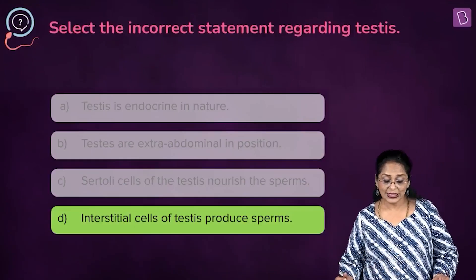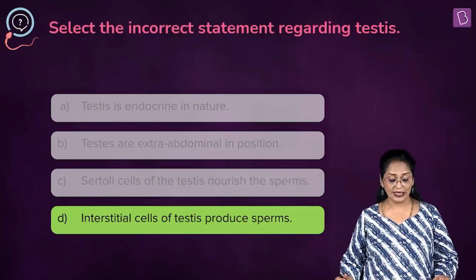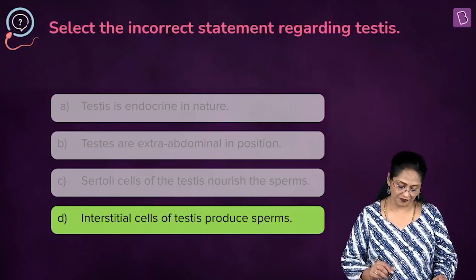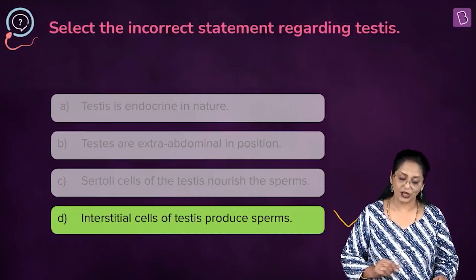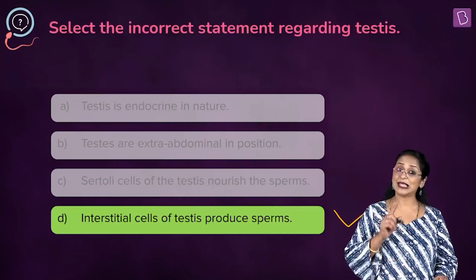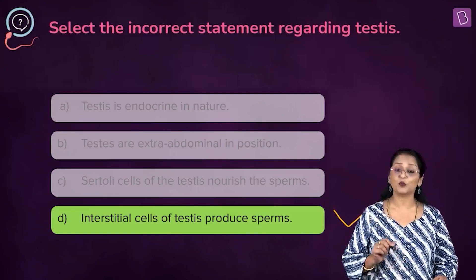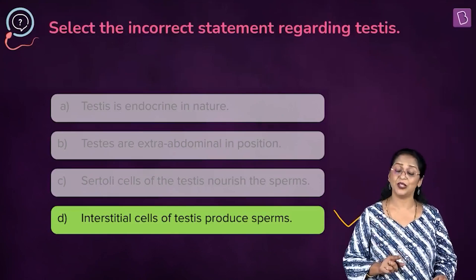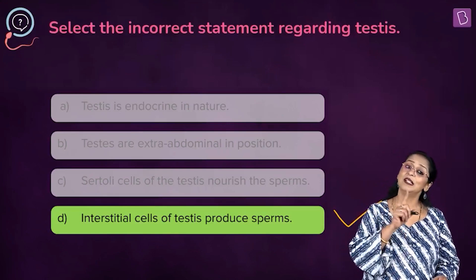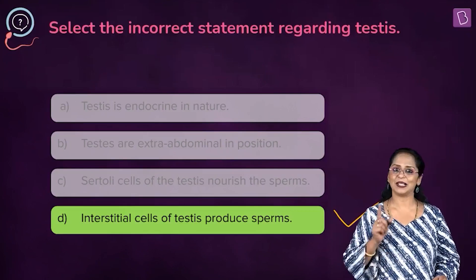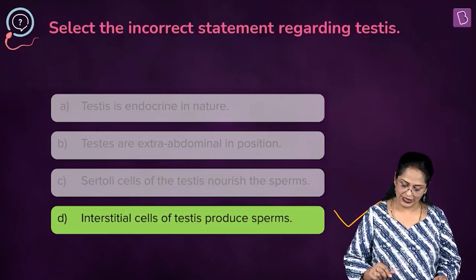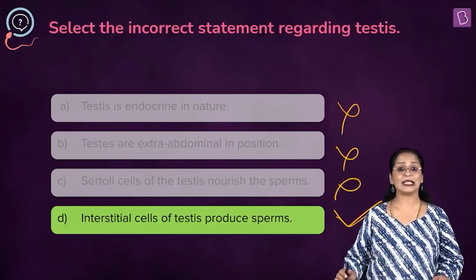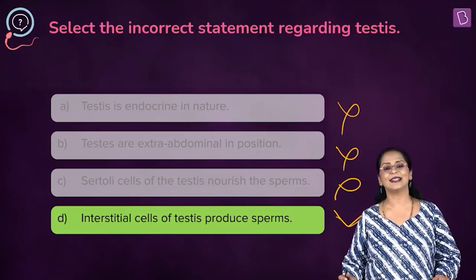So the incorrect statement regarding the testis: D is the answer, because it says interstitial cells produce sperms — which is incorrect. Interstitial cells produce androgens. Sperms are produced by the male germ cells or sperm mother cells. So D is the right option — eliminate A, B, and C.